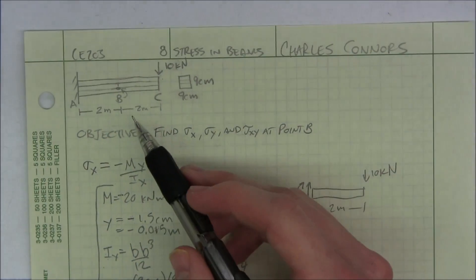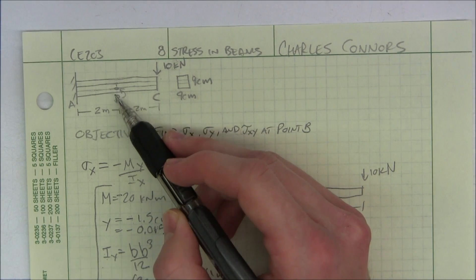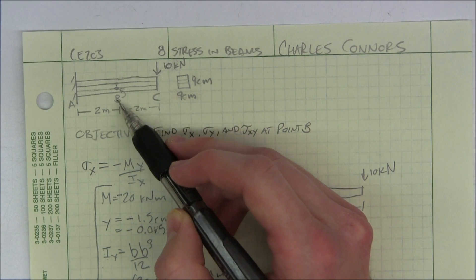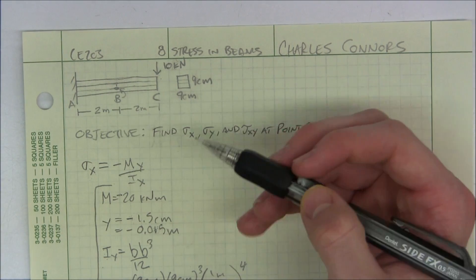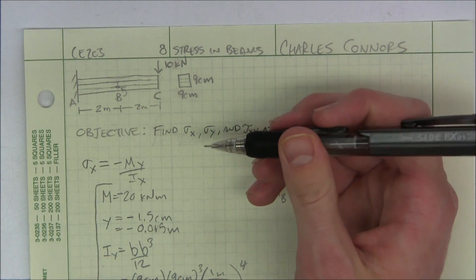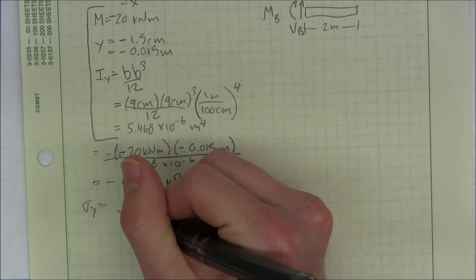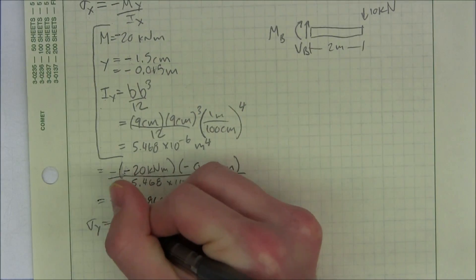Sigma y, let's look back at our picture. The only time that we're going to have sigma y for a beam is if our force is directly above it. And we're not going to talk about that in this class. So for this class, for beams, our sigma y is going to be 0.